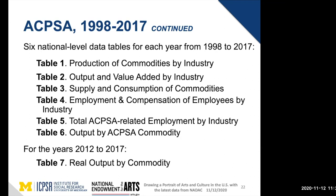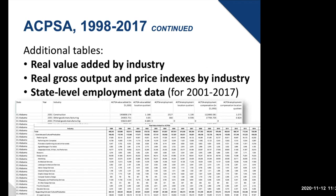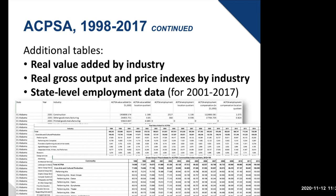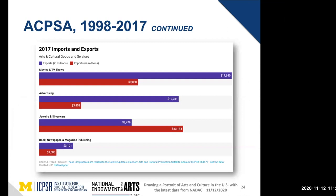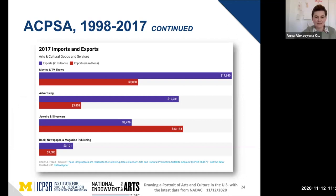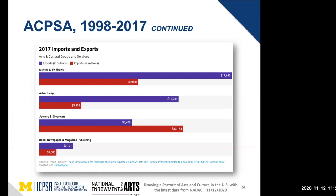Rather than being available in SPSS or SAS, these are Excel tables — summary statistics that are easy to digest. The infographic based on these data shows cultural exports and imports: the purple bar is exports, the red bar is imports. The U.S. is pretty good at exporting movies and TV shows, and also exports jewelry and silverware — an interesting look at where our cultural objects come from and go.